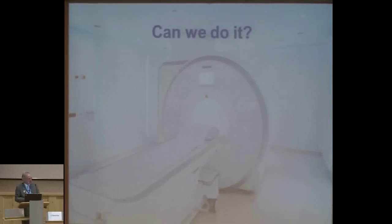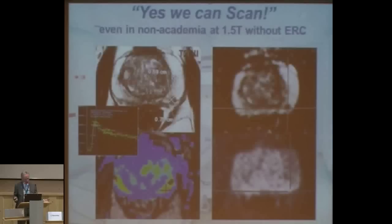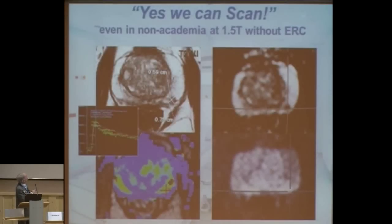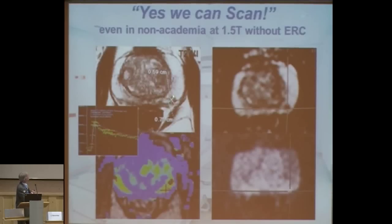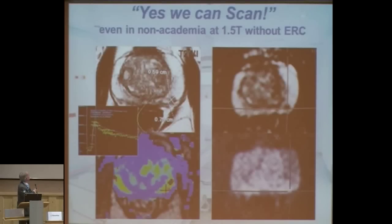Can we do this outside Nijmegen and centers of excellence? The answer is yes. I got these images from my colleague in the middle of the desert, John Feller. He's a little bit passionate about prostate MRI, has a 1.5 Tesla machine, no endorectal coil. He went to some courses, practiced, got feedback from his urologist, and is doing a very good job. You can see a small tumor, positive on DCE, black and white on diffusion — a very tiny Gleason 7 tumor. 1.5 Tesla, no endorectal coil.